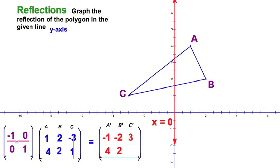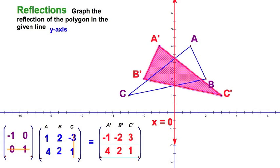For our last element, second row times the third column: 0 times negative 3 plus 1 times 1 gives us 1. Looking at our result, the coordinates of A-prime are (-1, 4), the coordinates of B-prime are (-2, 2), and the coordinates of C-prime are (3, 1). Well done.